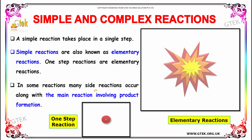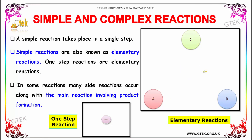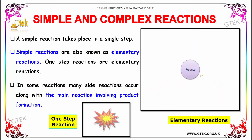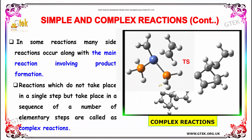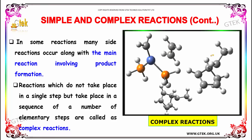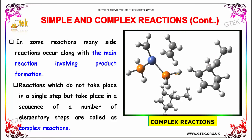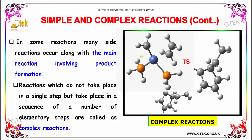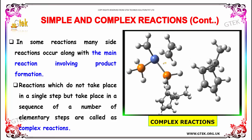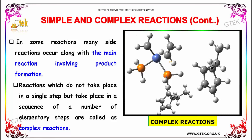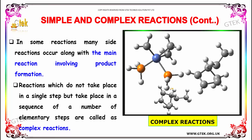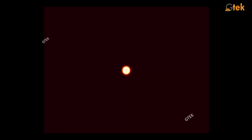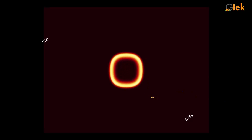In some reactions, many side reactions occur along with the main reactions involving product formation. Reactions which do not take place in a single step but take place in a sequence of a number of elementary steps are called complex reactions. So for reactions there are two major types: one is called a simple reaction, the other one is a complex reaction.